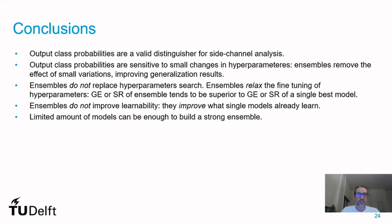A positive finding is that a limited number of models can be enough to build strong ensembles. If you are using good hyperparameters and tuning them, combining those models can lead to strong results without needing hundreds or thousands of models — just 10 to 50 models in some cases is sufficient to achieve a good ensemble.